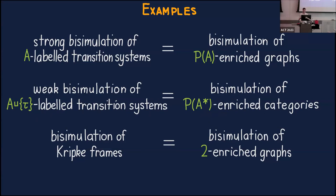As a third example, in modal logic people are interested in bisimulations of Kripke frames, and this corresponds to bisimulations of graphs enriched in the interval category — the category with two objects and one non-trivial arrow between them. So here are a few examples of enriched bisimulations.